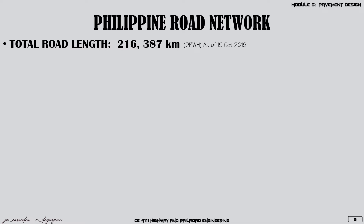Before we discuss pavement design, let us have an overview of the Philippine Road Network. As of October 2019, from the data of the Department of Public Works and Highways, the Philippines has a total road length of 216,387 kilometers, of which 61,093 kilometers are already paved.